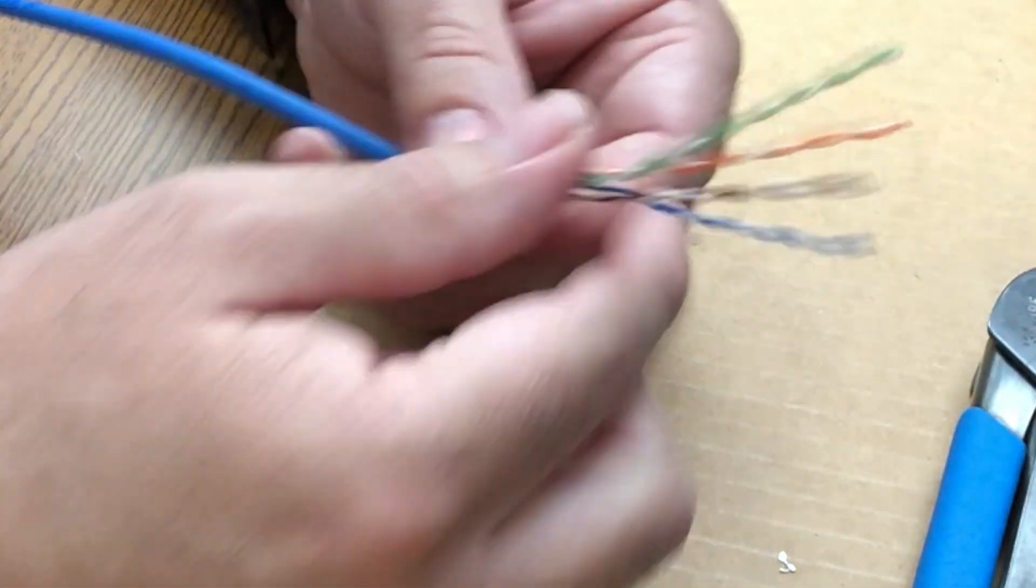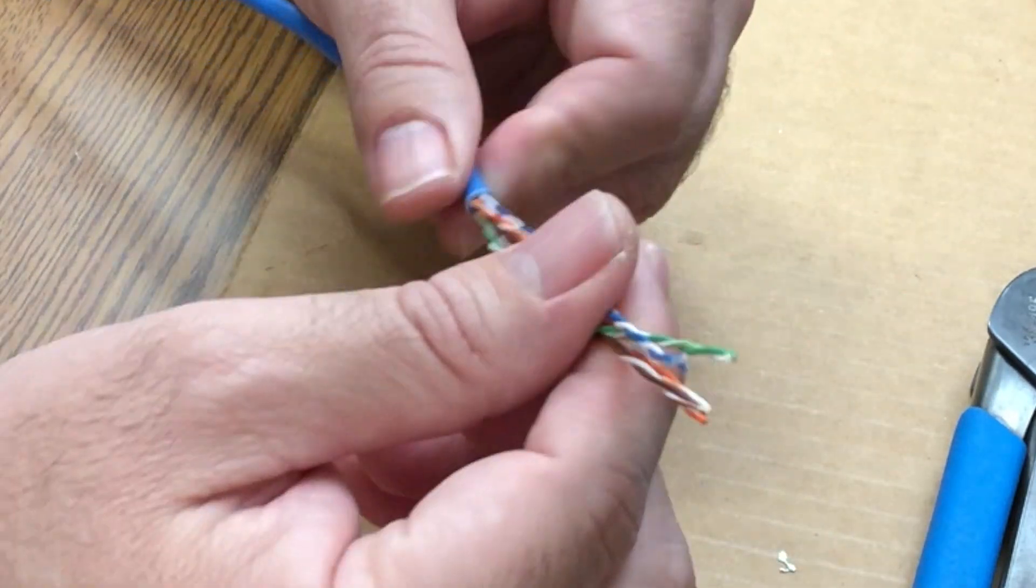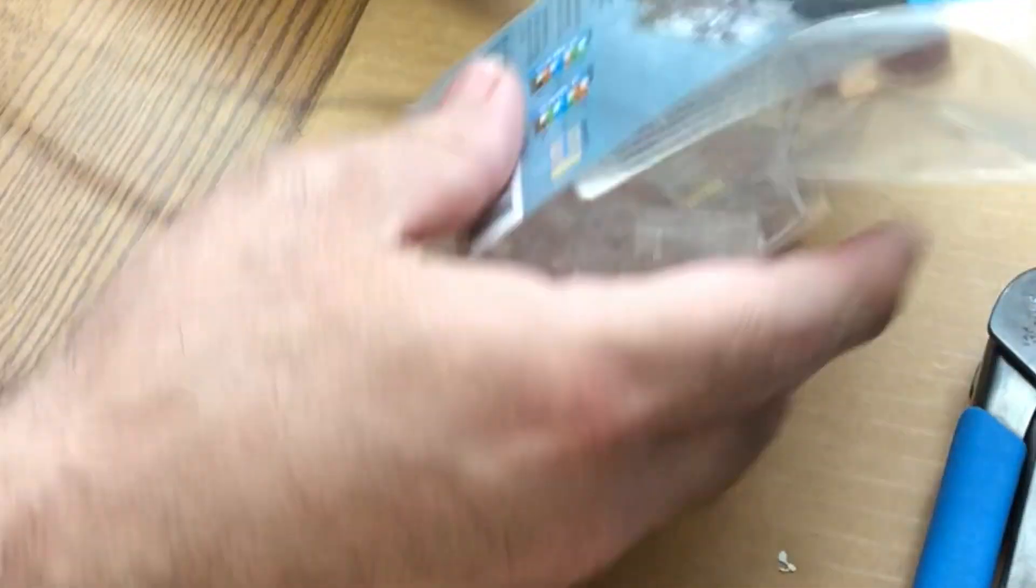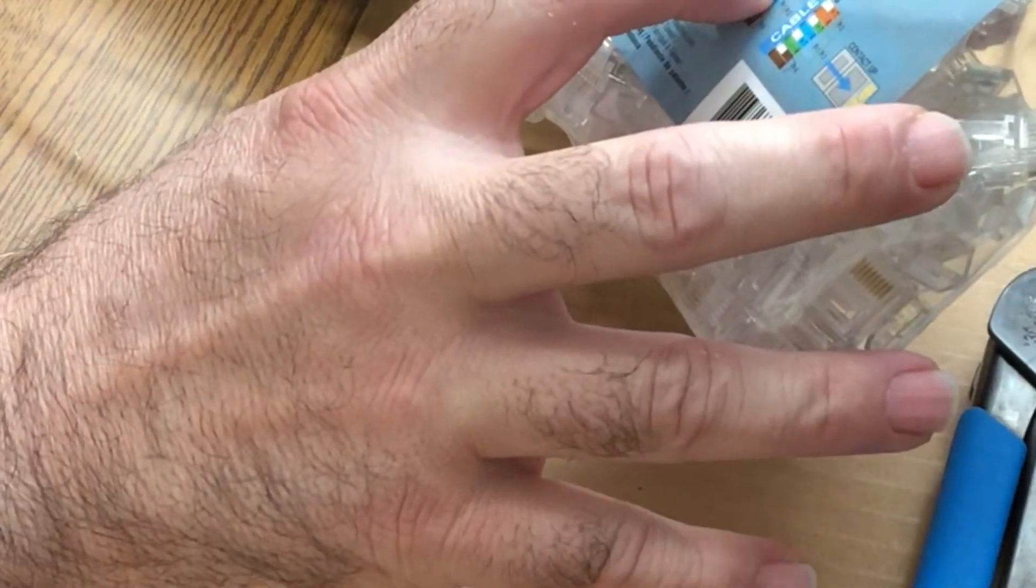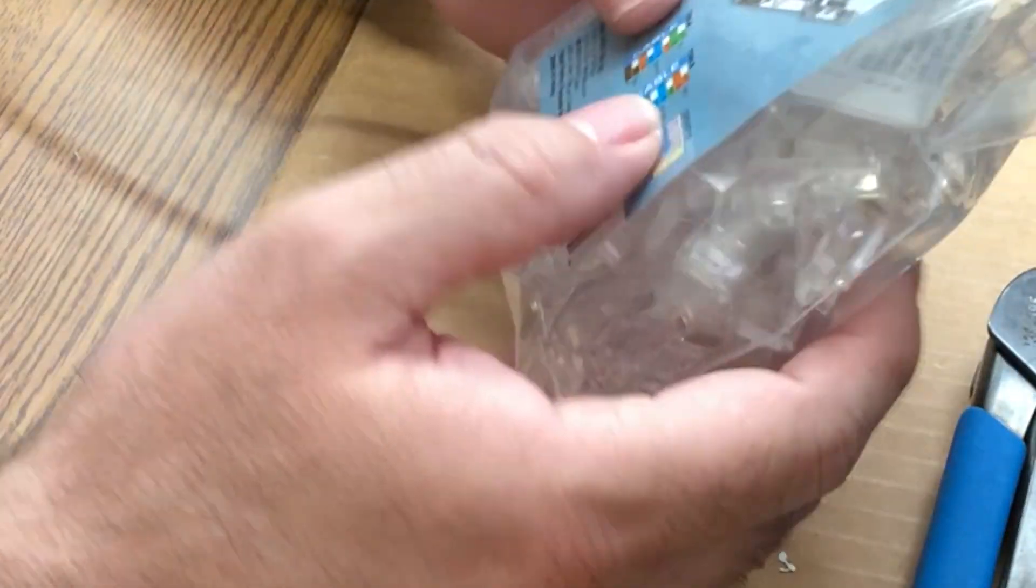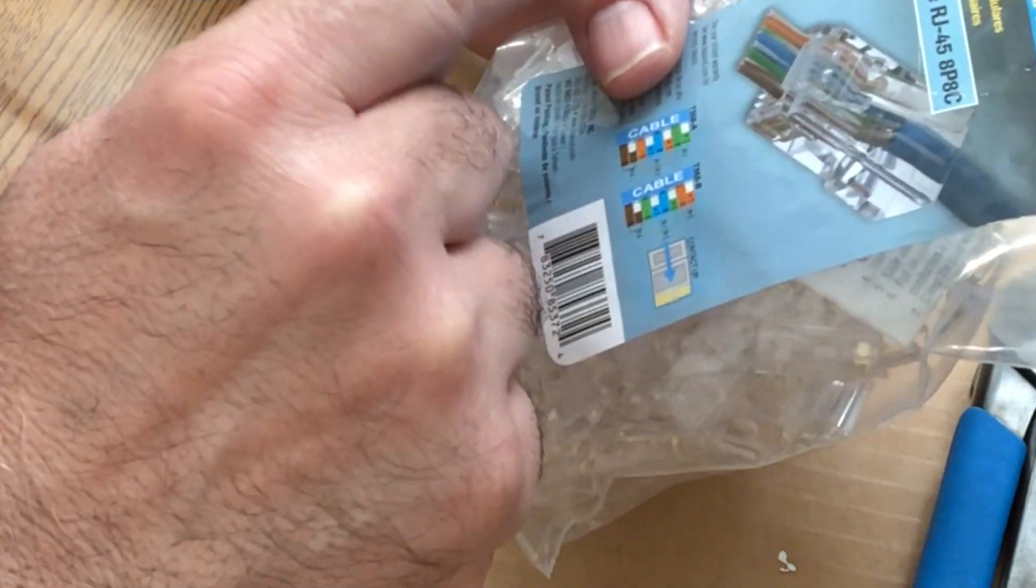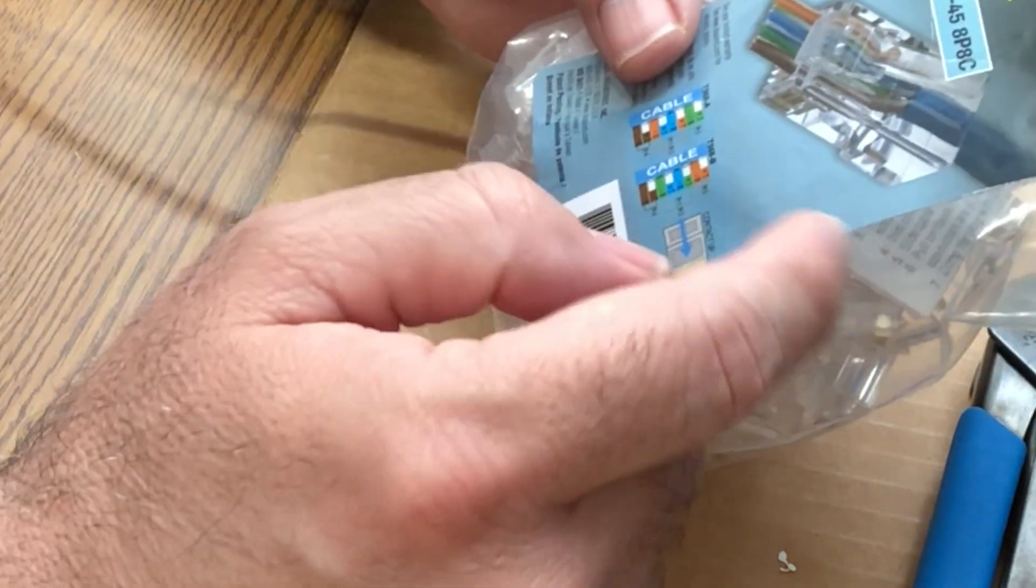There's two different standards when it comes to terminating category cabling. You got what's called 568A and the 568B standard. You want to make sure that when you terminate the cable like this that both ends are either A or both ends are either B.